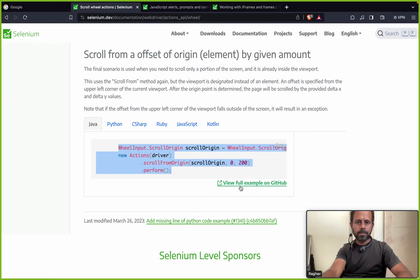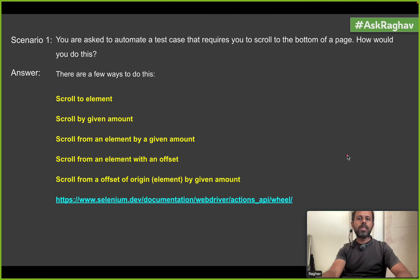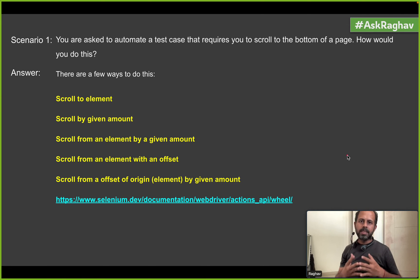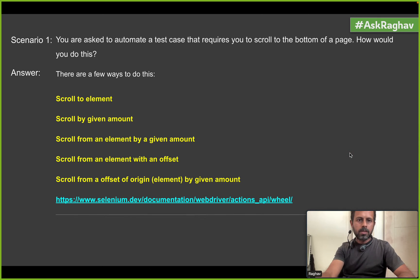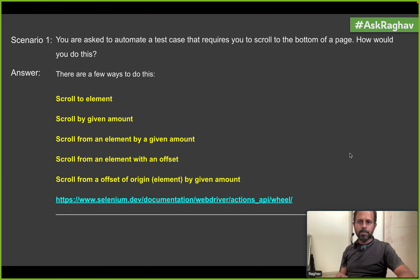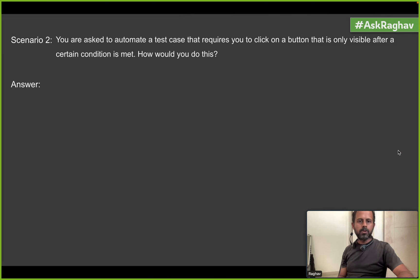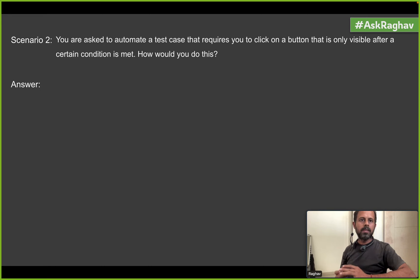In general, remember these are the scrolling options and you can find working examples for all of them. That was scenario one. Let us move to scenario two: you are asked to automate a test case that requires you to click on a button that is only visible after a certain condition is met. How would you do this?